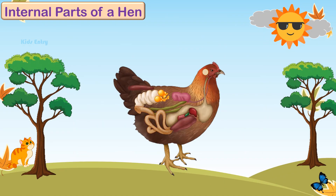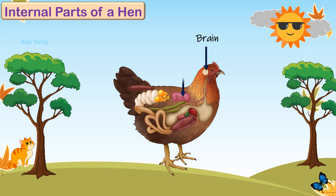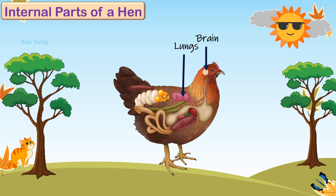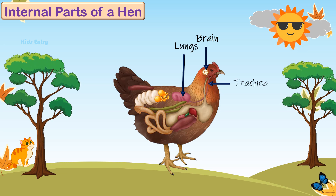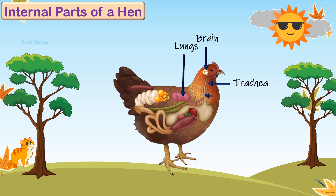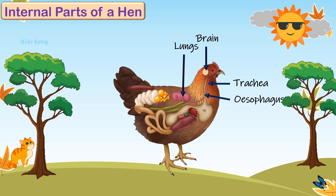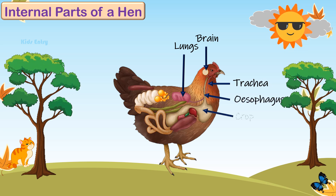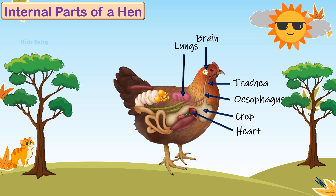Internal parts of a hen: brain, lungs, trachea, esophagus, crop, heart.